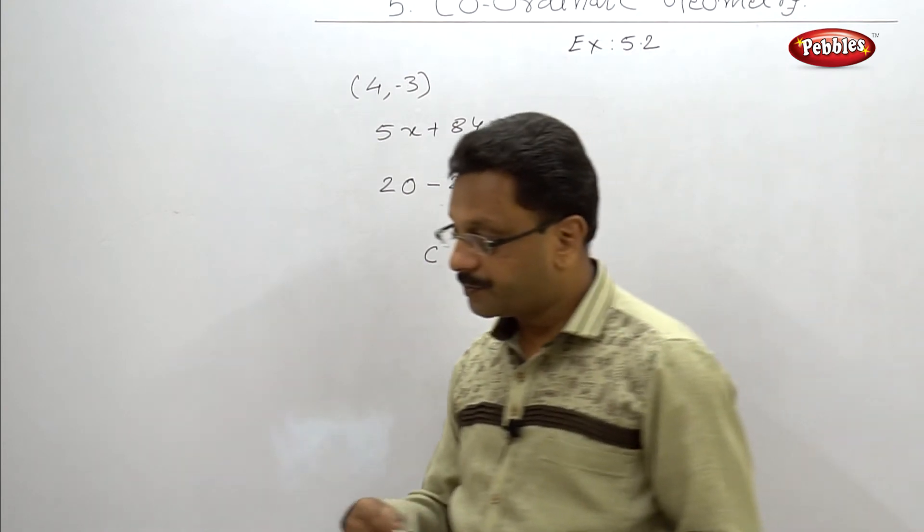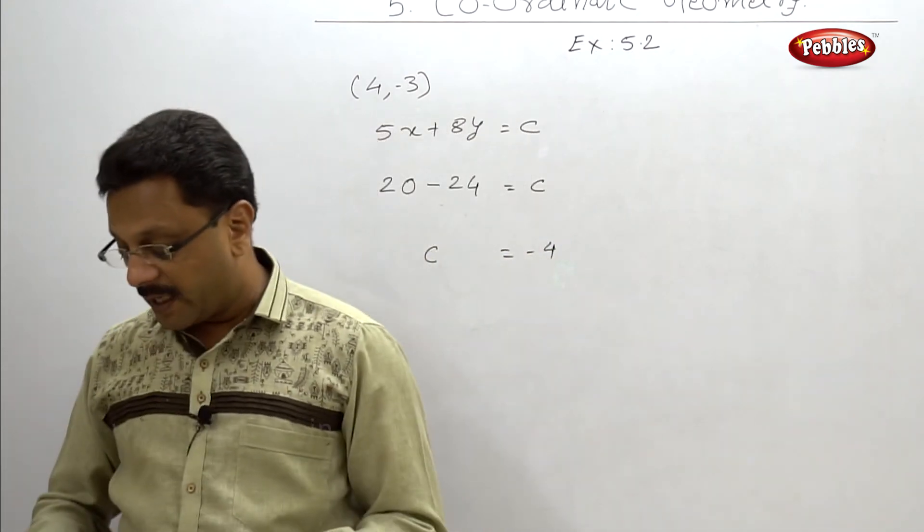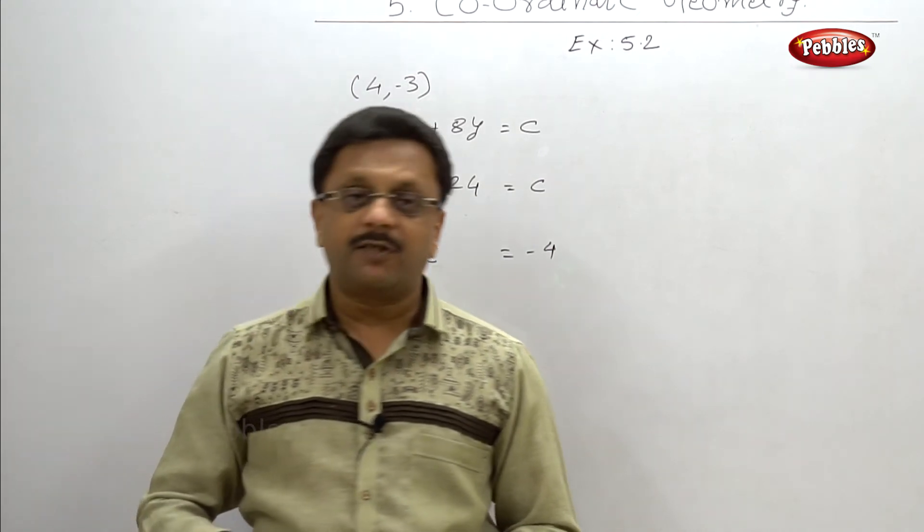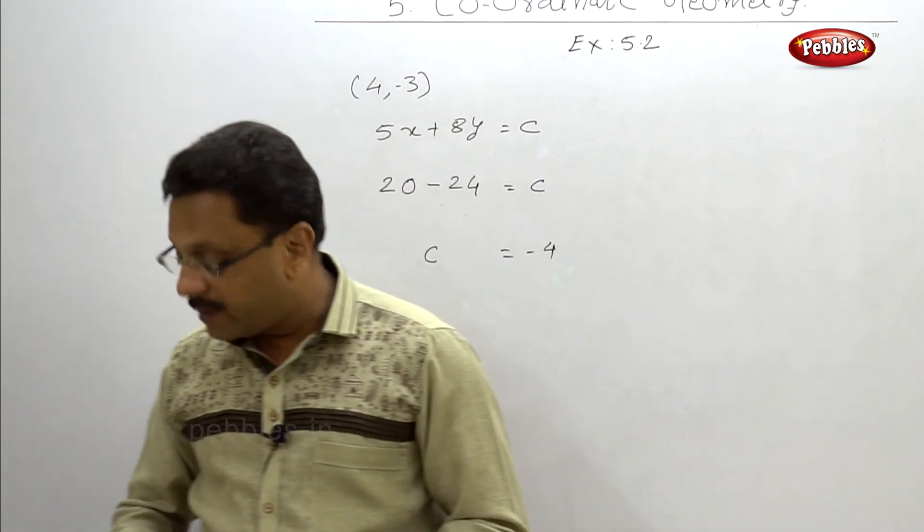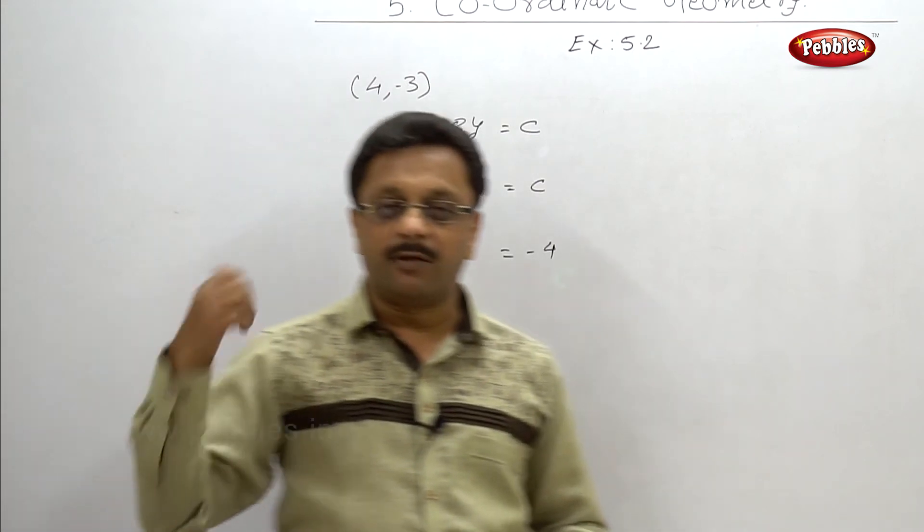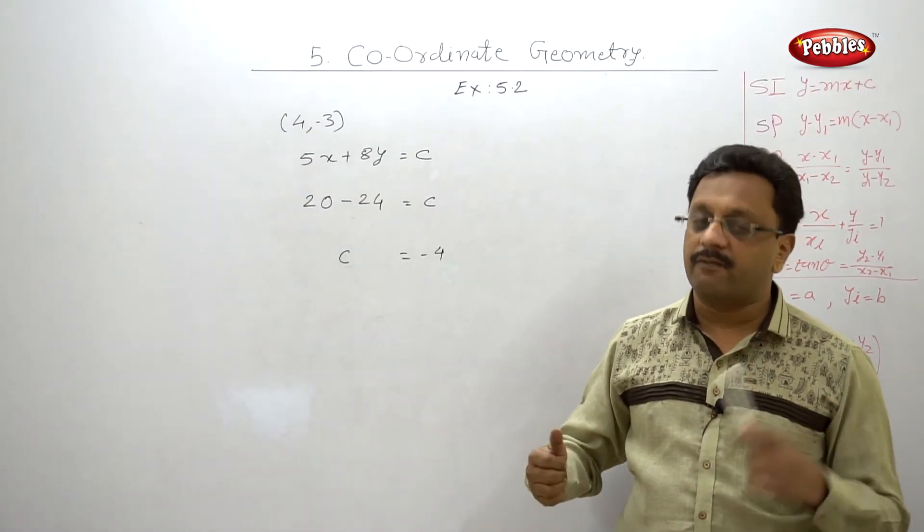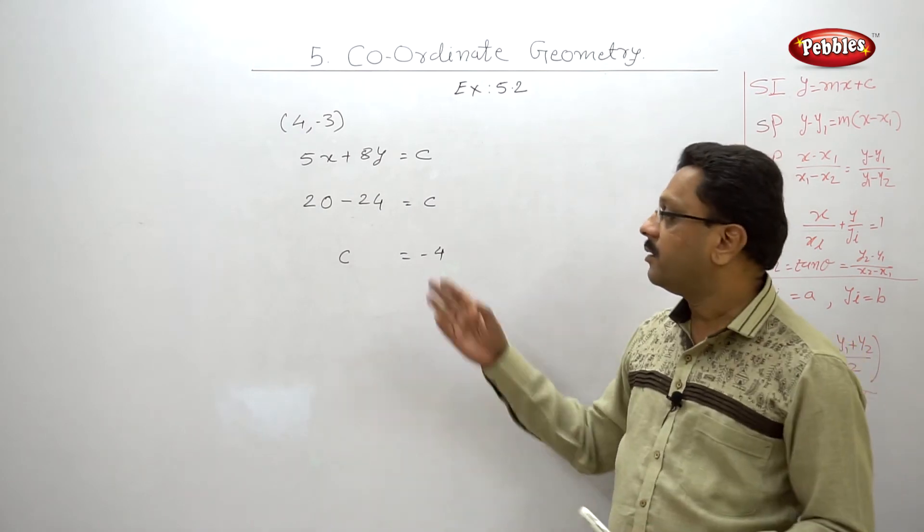Let us solve next one. If (-2, -3) is a point on line 2y is equal to mx plus 5, find m. Exactly similar example to this. Just substitute the values of x and y and you will get the answer.